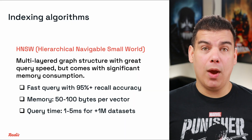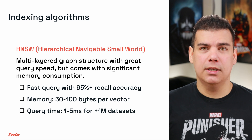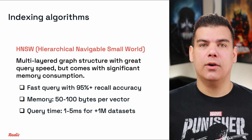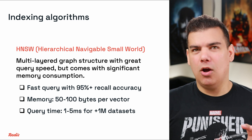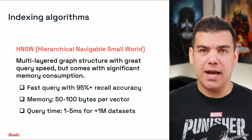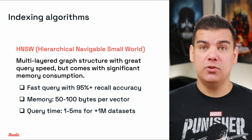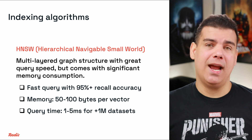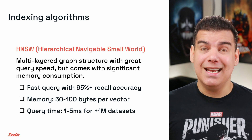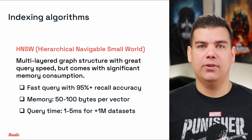The first one is called HNSW, or Hierarchical Navigable Small World. This algorithm creates a multi-layered graph structure with connections between vectors at different levels. It offers excellent query speed with 95%+ recall accuracy. But here's the catch: its memory consumption is significant, often 50 to 100 bytes per vector beyond the vector data itself. Query times typically range from 1 to 5 milliseconds for a million-scale dataset.